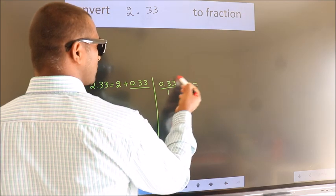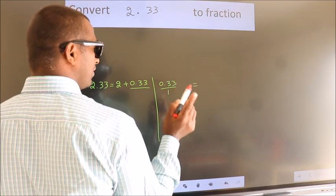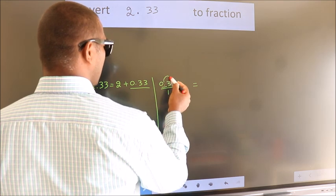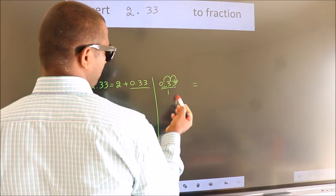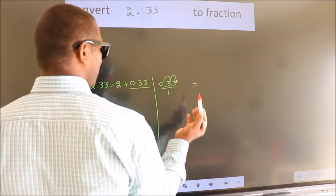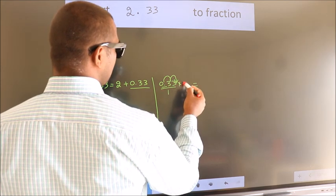To convert this to fraction, for that we have to move this decimal after 1, 2 numbers. To move this decimal after 2 numbers, for that multiply it with 100.